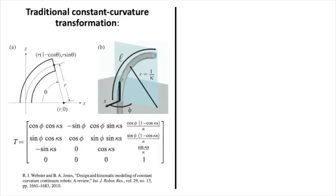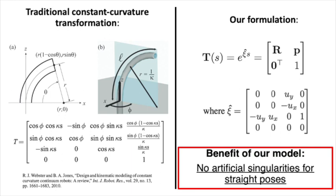This formulation is equivalent to the commonly used constant curvature transformation, which is expressed in terms of the polar angle and the magnitude of curvature vector. However, our formulation has the advantage that it does not suffer from artificial singularities while in straight configurations, which is inherent to the polar representation.